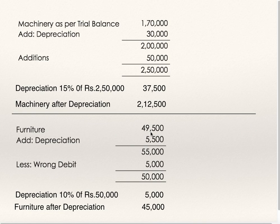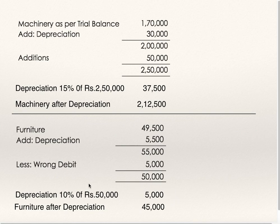Furniture as per trial balance is 49,500. Add back depreciation of 5,500 given in the trial balance. Opening balance of furniture is 55,000. They have wrongly debited 5,000, so deduct it. The correct balance of furniture is 50,000. 10% of 50,000 is depreciation which is 5,000. 50,000 minus 5,000 gives 45,000 to be shown on the asset side of the balance sheet as the furniture net figure. And 5,000 depreciation is to be debited to profit and loss account.